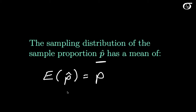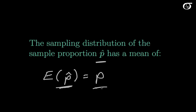It's not too difficult to show this mathematically. On average, p-hat equals p — the sample proportion equals the population proportion. So p-hat is an unbiased estimator of the population proportion p.